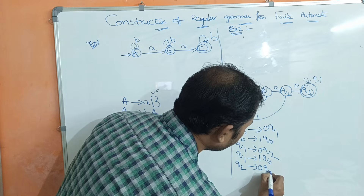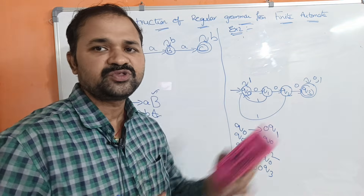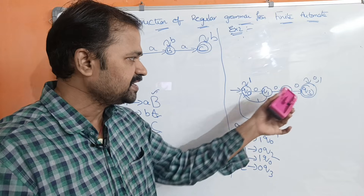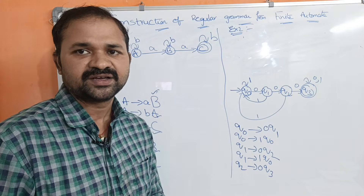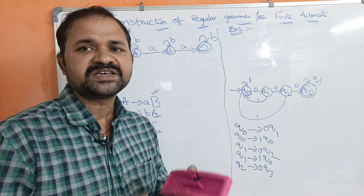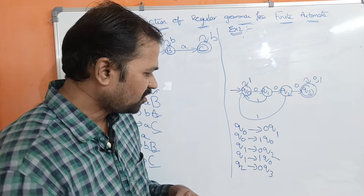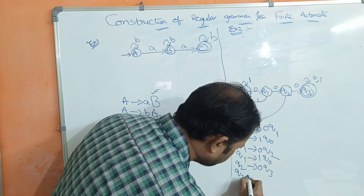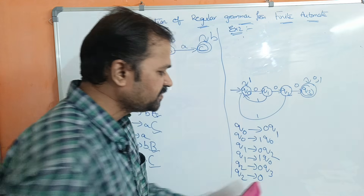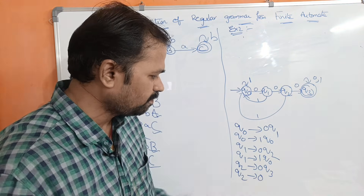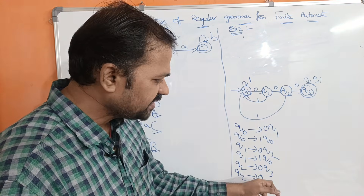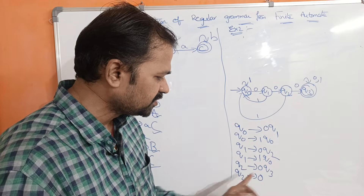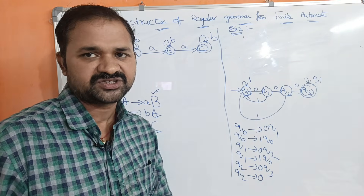Next, q2 on 0 goes to q3, and q3 is the final state. Since we are reaching the final state, we write q2 implies 0q3 and also q2 implies 0 — meaning even without a following state, applying 0 on q2 can reach the final state. Then q2 on 1 goes to q0, giving q2 implies 1q0.